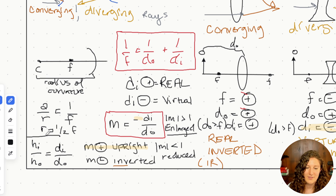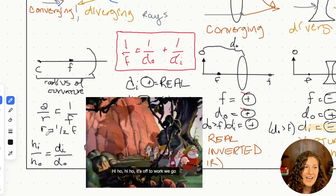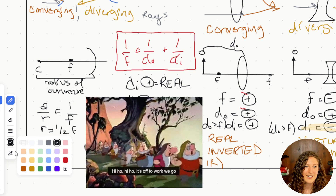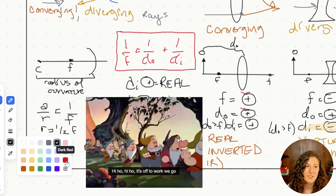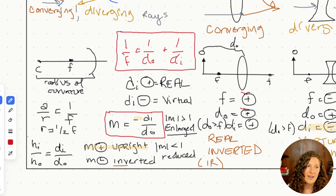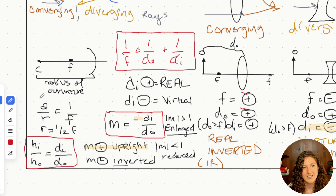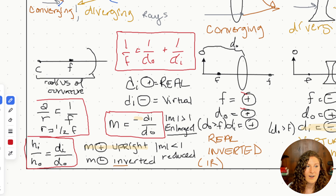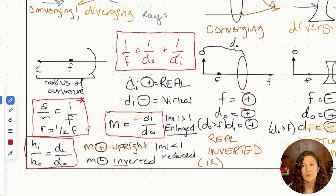Our final equation is the ratio of heights: HI over HO equals DI over DO — image height over object height equals image distance over object distance. The mnemonic for this equation is HI HO DAI DO — easy to remember. Just know that our heights are proportional to our distances. As a reminder, here are our mirror equations with our radius of curvature, which is only used for mirrors; however, we can substitute this into the thin lens equation.